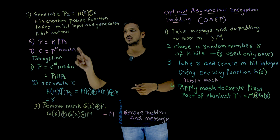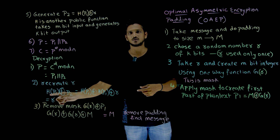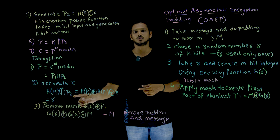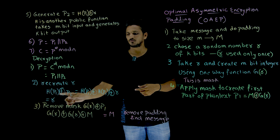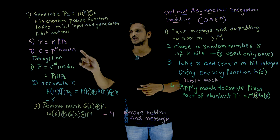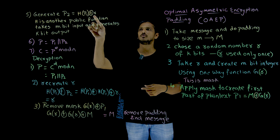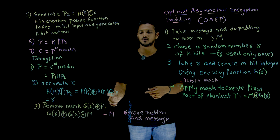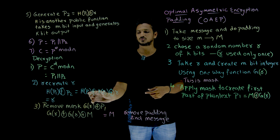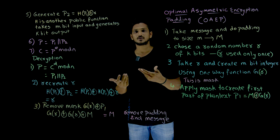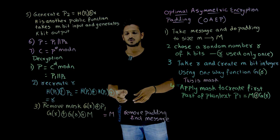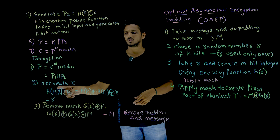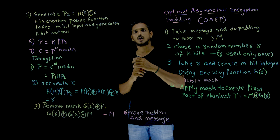During decryption, if you compute H(P1) XOR P2, what happens? P2 means H(P1) XOR R. So H(P1) XOR P2 = H(P1) XOR H(P1) XOR R. These two H(P1) terms get cancelled - this is the property of XOR. You are going to get R. So by using P1 and P2, you are going to recreate the R value.